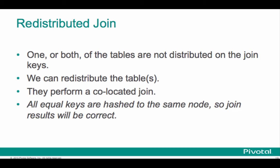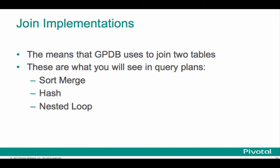In a redistributed join, one or both of the tables isn't distributed on the join key. We can redistribute those tables. Once we do that, we perform a co-located join. All the equal keys are hashed to the same node, so they land on the same node after the redistribution. The joins are going to be done as co-located joins, and the results will be correct again.